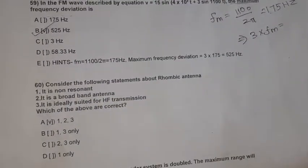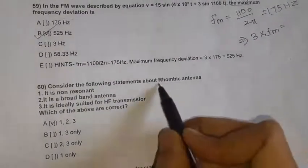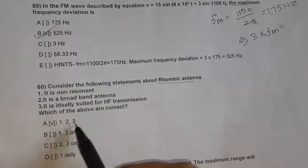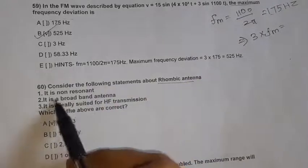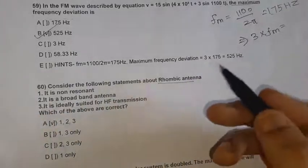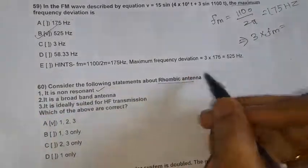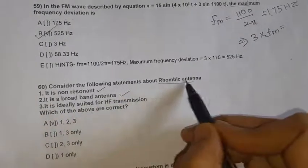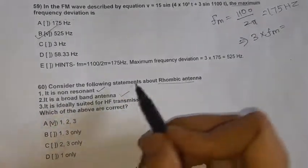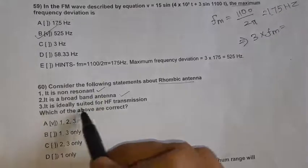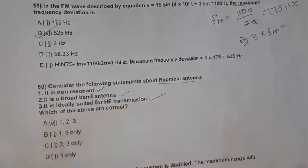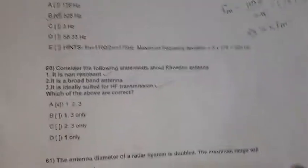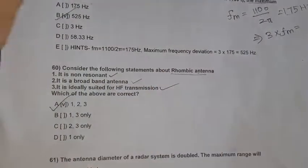Question 60: Consider the following statements about rhombic antenna. Rhombic antenna is a non-resonant antenna — yes. It is a broadband antenna — yes. It is ideally suited for high frequency transmission — yes. All statements are correct. Option A, 1, 2, 3 all correct, is the right option.